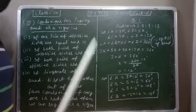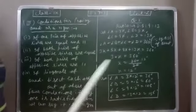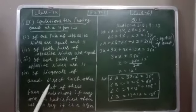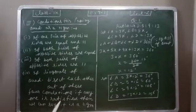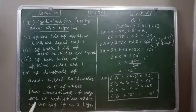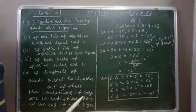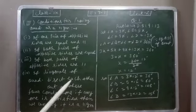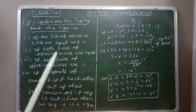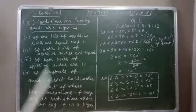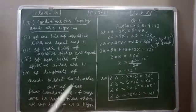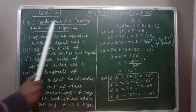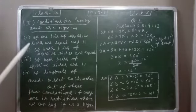If we prove any one of these four conditions, then we can say the quadrilateral is a parallelogram. So in this exercise we have three basic points: first, definition of quadrilateral; second, types of quadrilateral; and third, conditions for proving a quadrilateral as a parallelogram.